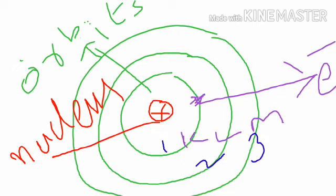It contains protons and neutrons. Protons have positive charge and neutrons have no charge. That's why nucleus has positive charge.